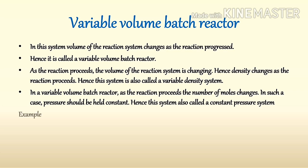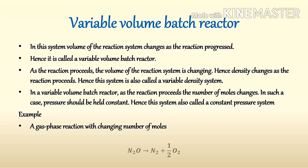An example is a gas phase reaction with a changing number of moles. Consider the decomposition reaction at constant pressure: N2O → N2 + ½O2. In this reaction, 1 mole of N2O gives 1.5 moles of products at constant pressure and temperature. We can see the number of moles is changing; due to this, volume will increase. Hence this is an example of a variable volume system.